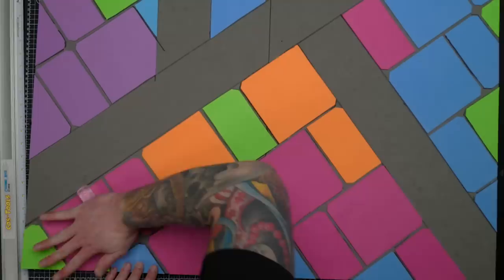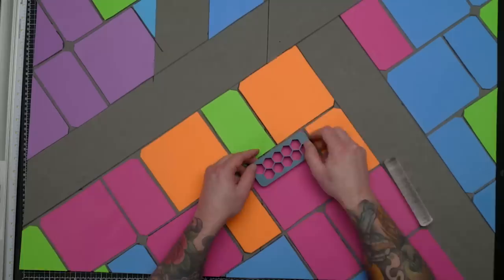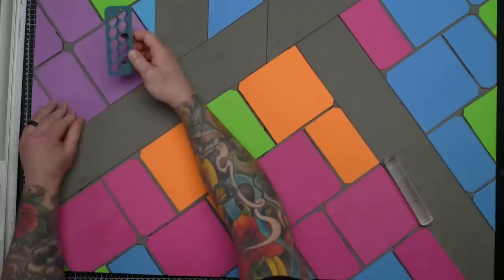The downside to EVA foam is that it doesn't take texture very well. Because it's so elastic, any texture or pattern you indent it is gonna be really soft. But I did what I could to add a bit of designs to things using some hex cutters, rollers, and a rock. The roller was essentially useless, but the hex pattern looked all right.